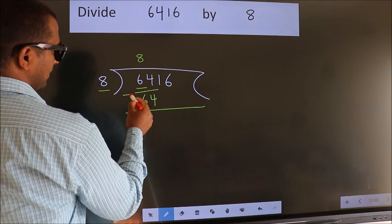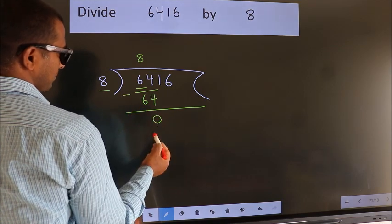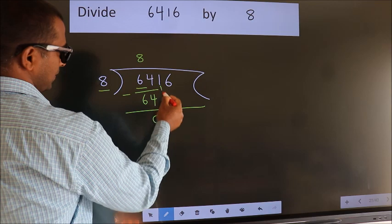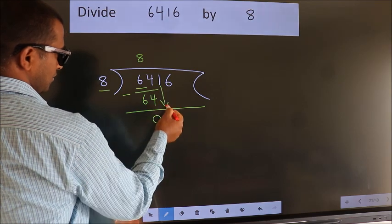Now, we should subtract. We get 0. After this, bring down the beside number. So, 1 down.